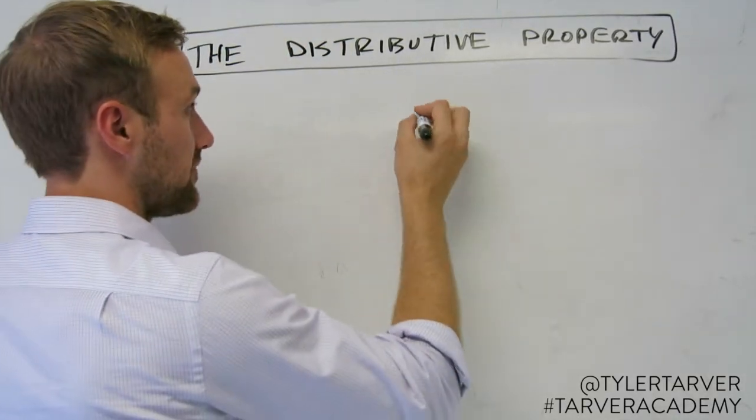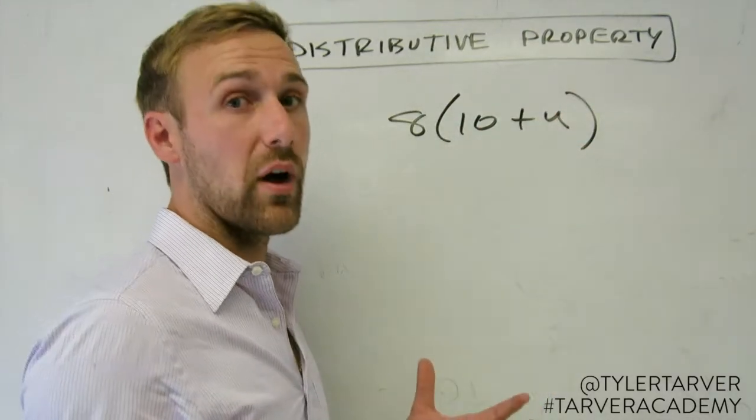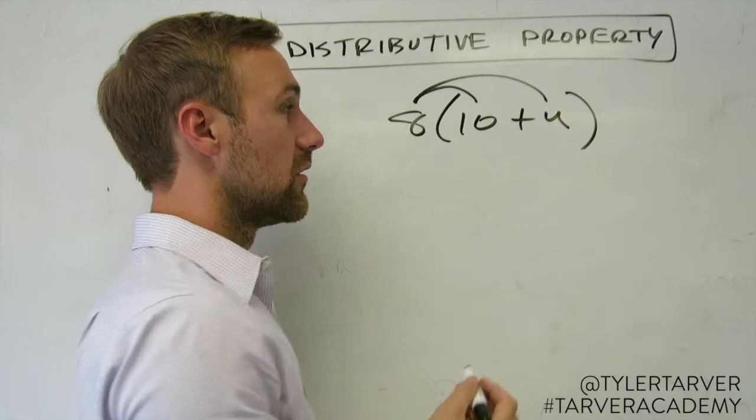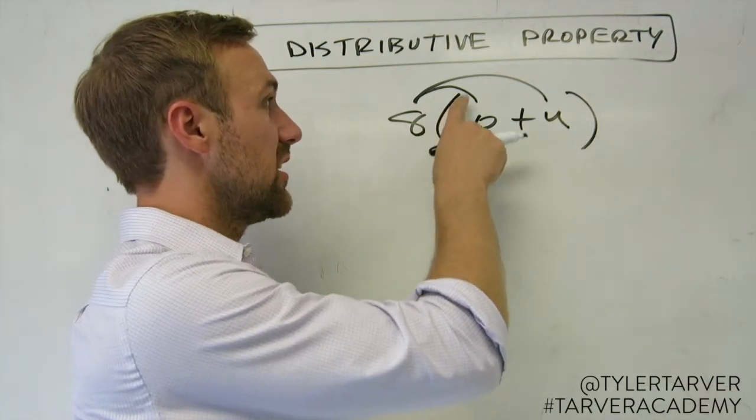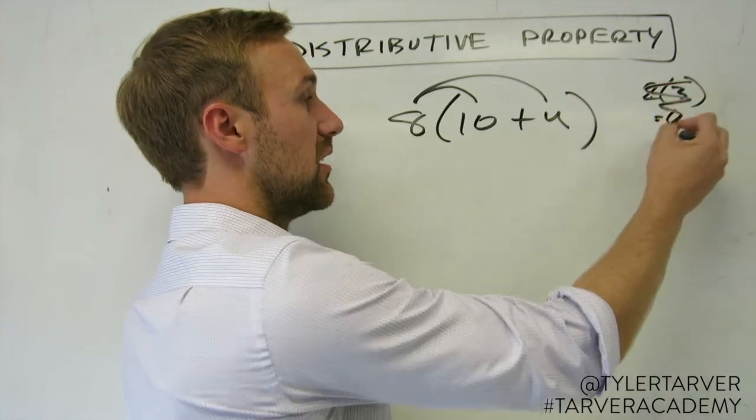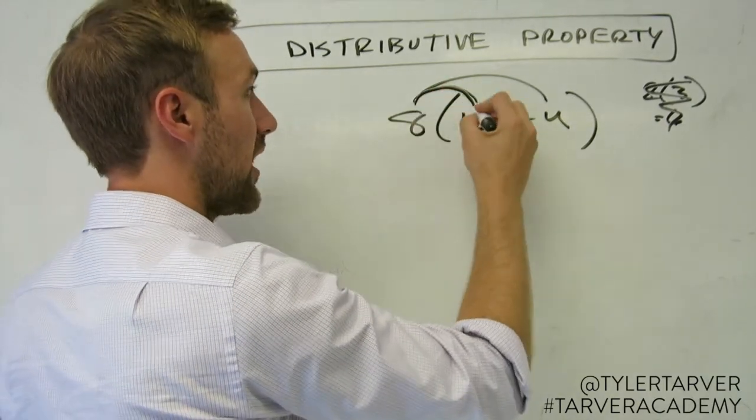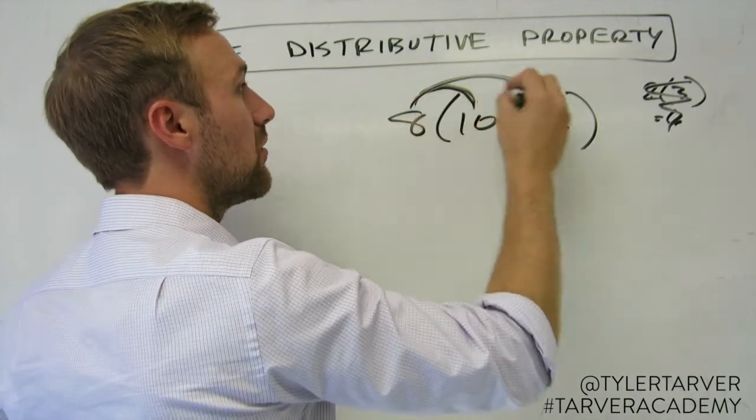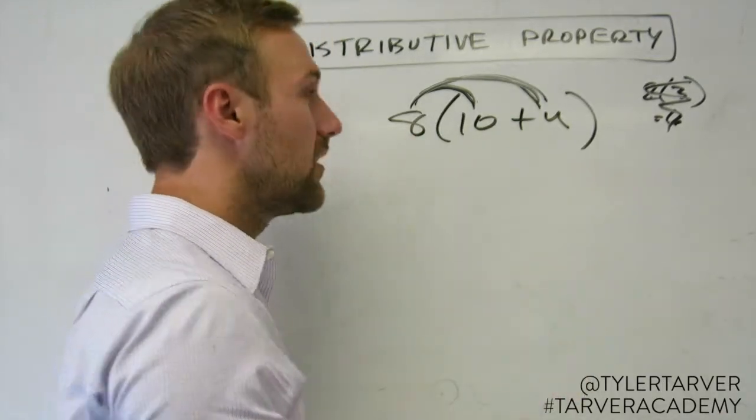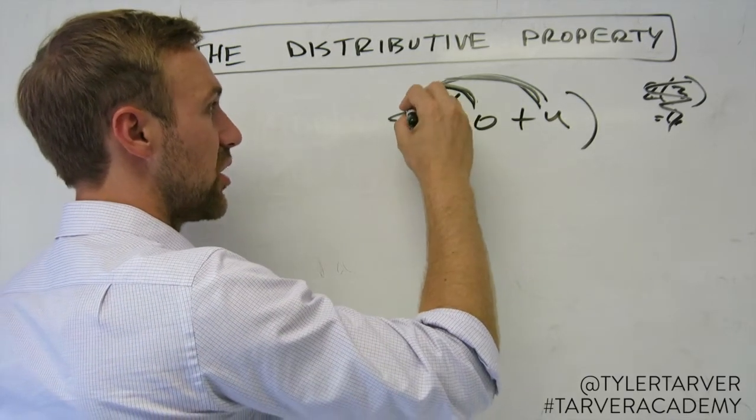When you use the distributive property, the simple way of explaining it is you're multiplying this times everything in here, one at a time. Parentheses mean multiplication if another number is hanging out right next door to it. You're multiplying it not only by the number that's straight up right next to it, but also every number in there. A lot of kids mess up on this - they'll just distribute it to the first one. Don't do that.